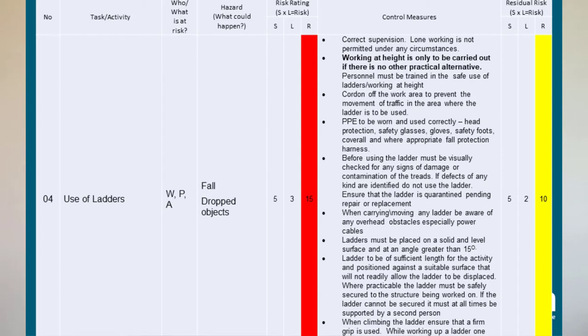We could go on further showing additional information about working at height, including the use of ladders. The simple methodology here is: look at what the task, activity, or item is; who or what is at risk; what the hazard itself is; and then do a risk rating — severity multiplied by likelihood — to give us the risk with no controls in place. Then identify what controls we have, possibly adding more if needed, and do the risk assessment again showing the residual level. If we don't get it low enough, we may need to step back and take guidance from others to identify what additional control measures are needed.